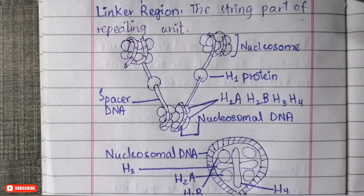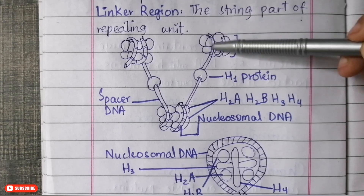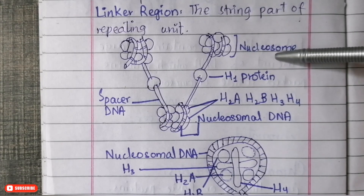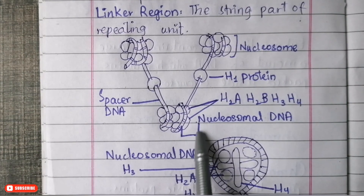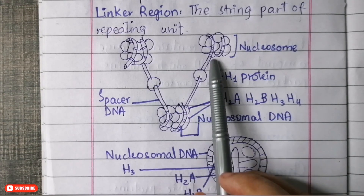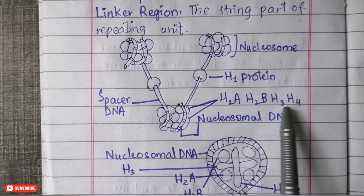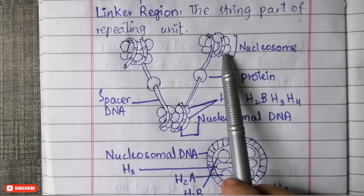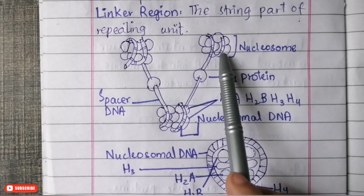Looking at the diagram of chromatin, this globular structure is known as the nucleosome. The thread-like structure you see, which has a lining on it, is known as nucleosomal DNA. The bead-like structures enclosed within the nucleosomal DNA are the histone proteins — H2A, H2B, H3, and H4. These are the types of histone protein enclosed in the nucleosomal DNA. The whole structure of DNA plus histone protein is collectively known as the nucleosome.